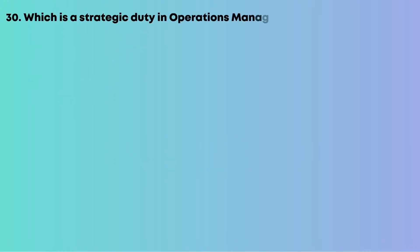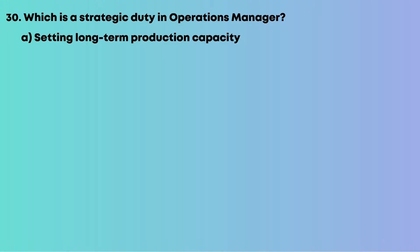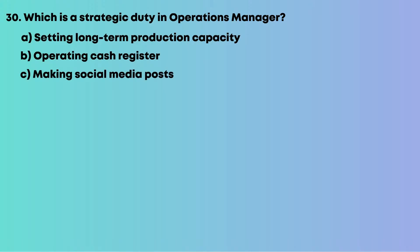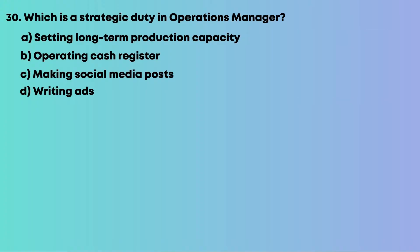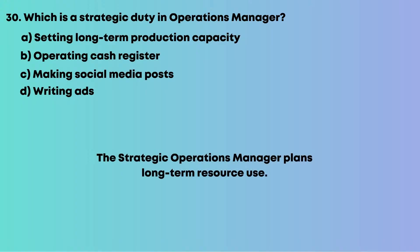Question 30: Which is a strategic duty of an operations manager? Options are: A, setting long-term production capacity; B, operating a cash register; C, making social media posts; D, writing ads. The strategic operations manager plans long-term resource use. So the answer is A, setting long-term production capacity.